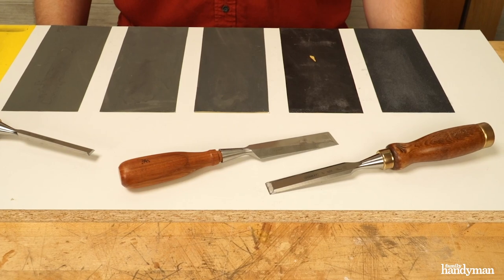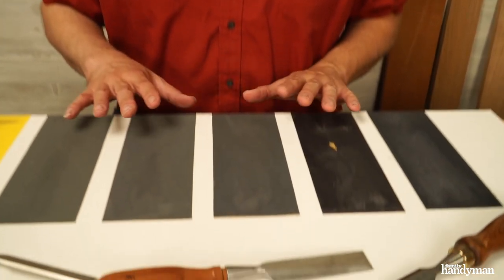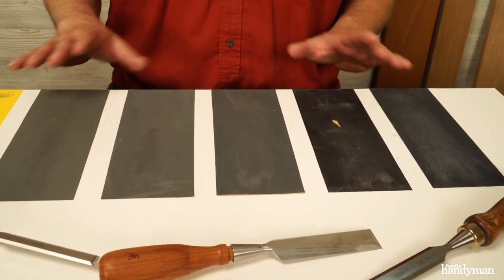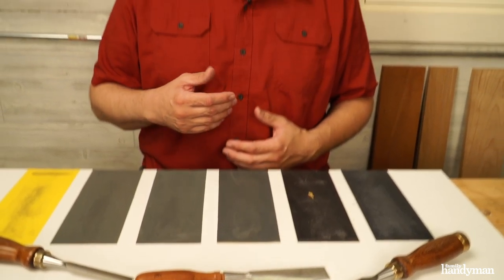Now all these chisels aren't worth a thing unless they're sharp, and that goes for hand plane blades too. I have a sharpening system here that's super simple that you can make yourself, and you don't have to invest hundreds of dollars on wet stones and sharpening stones.